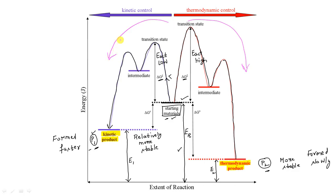A thermodynamically more stable product will not always be kinetically more stable. Please do not confuse thermodynamic stability with kinetic stability — these are different things. Any product formed faster is a kinetically controlled product. Any product formed slower but actually more stable is a thermodynamically stable product. Thermodynamic stability is associated with stability constants, equilibrium constants, the ability to exist at equilibrium, and bond energies. Kinetic control is associated with rates and mechanisms of reactions.